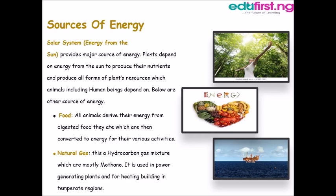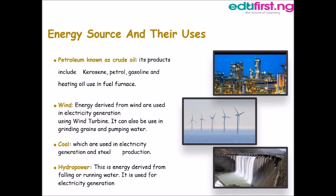Number two, we have natural gas. This is a hydrocarbon gas mixture which is mostly methane, and it is used in power generating plants and for heating, especially in temperate regions. Number three, we have petroleum, which is also known as crude oil, and its products include kerosene, petrol, gasoline, and heating oil, which is used in fuel furnaces.